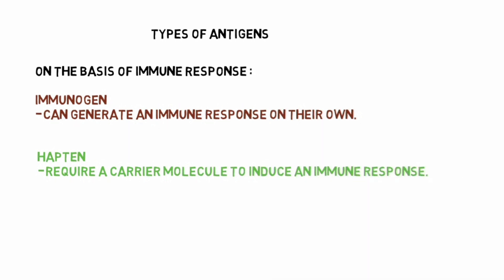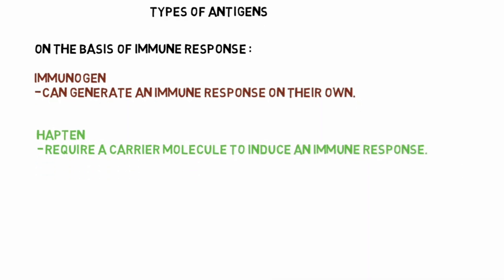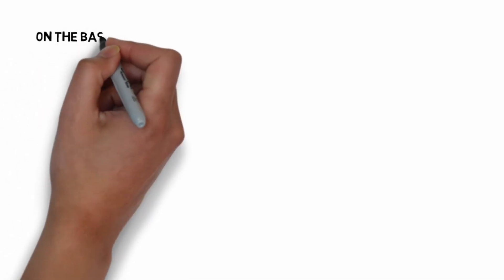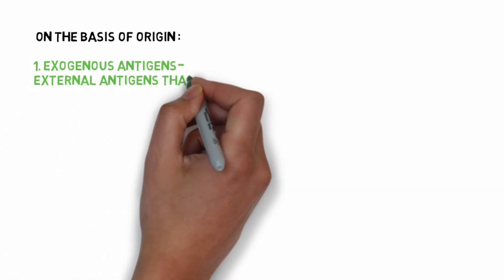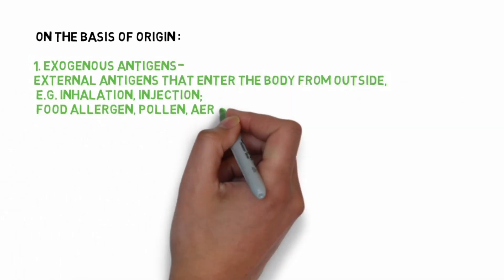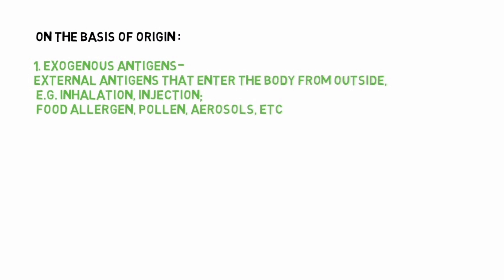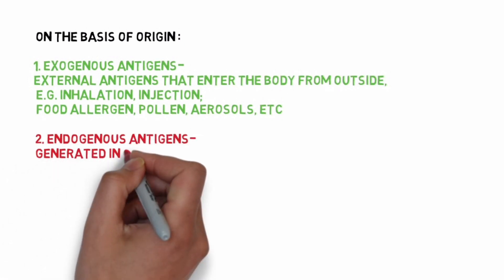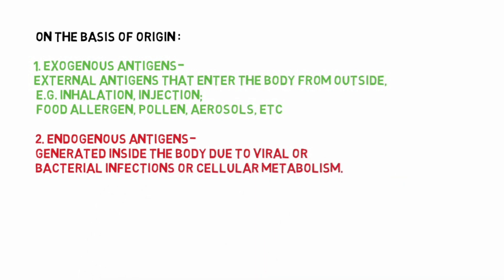Types of antigens on the basis of origin. Number one: Exogenous antigens. These are external antigens that enter the body from outside through inhalation or injection. Examples of exogenous antigens are food allergens, pollen, aerosols, etc. Number two: Endogenous antigens. These are generated inside the body due to viral or bacterial infections or cellular metabolism.